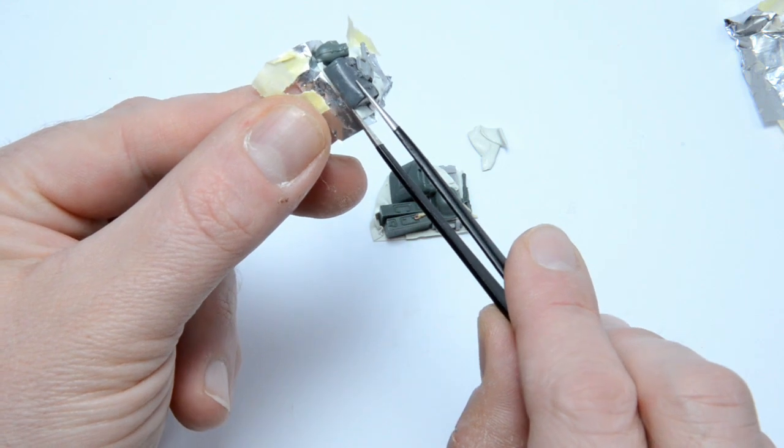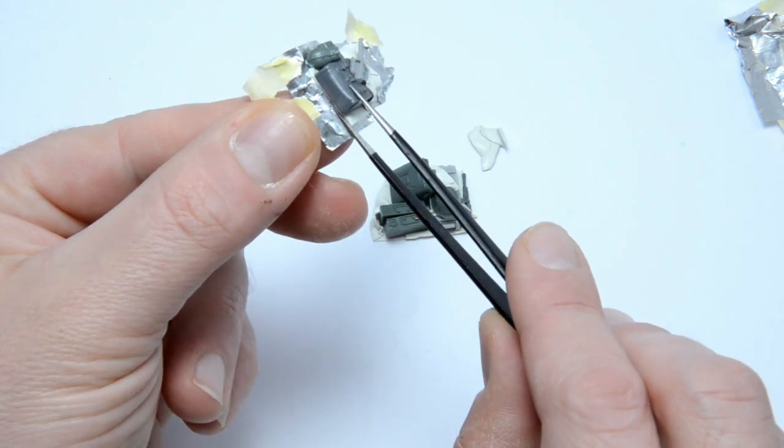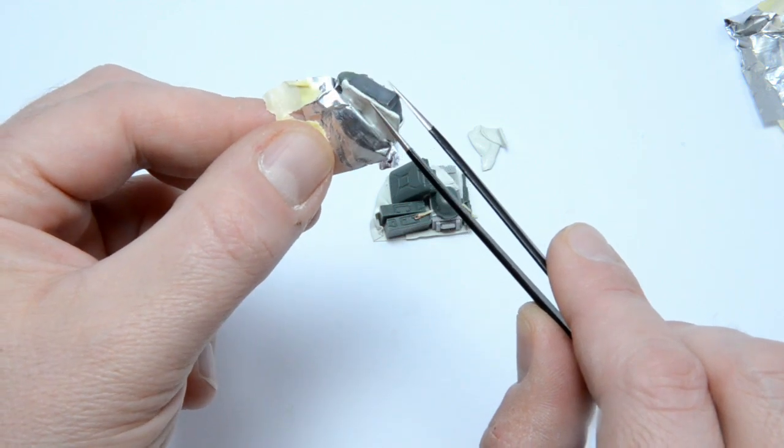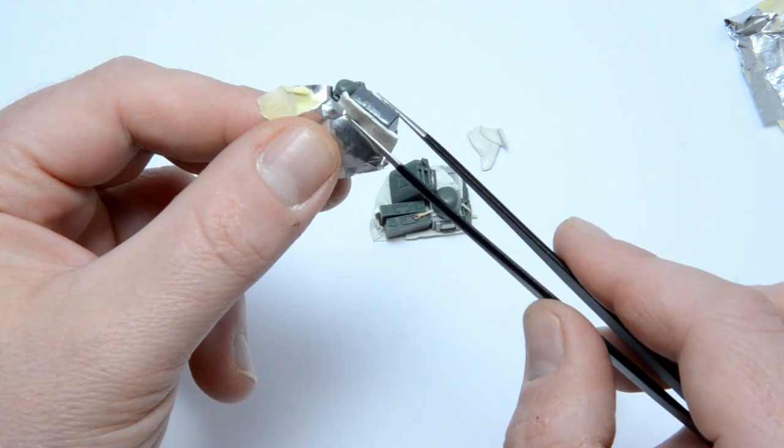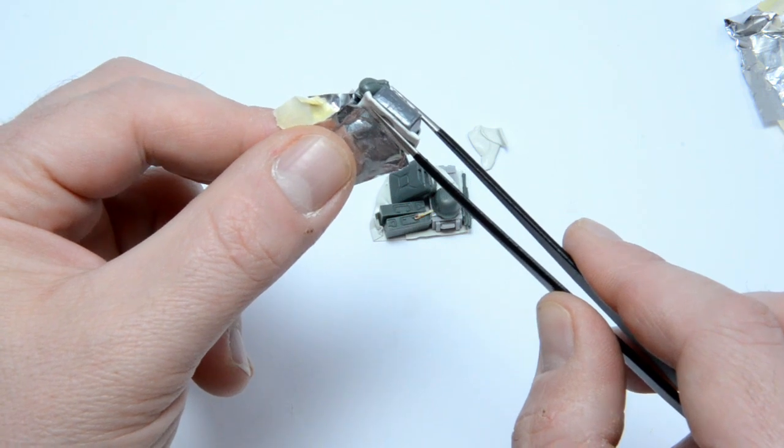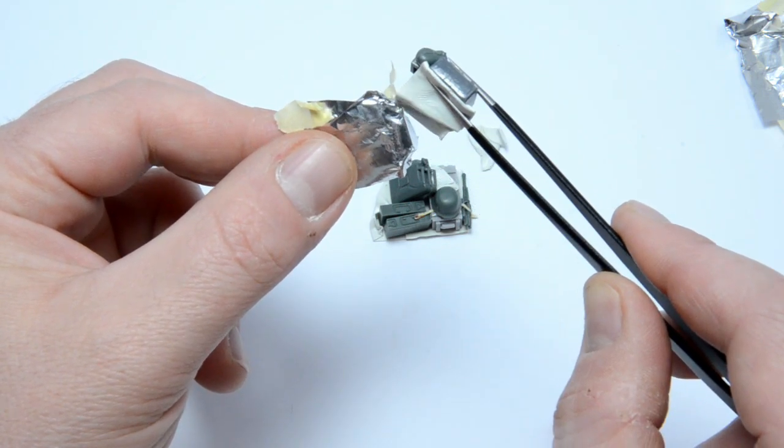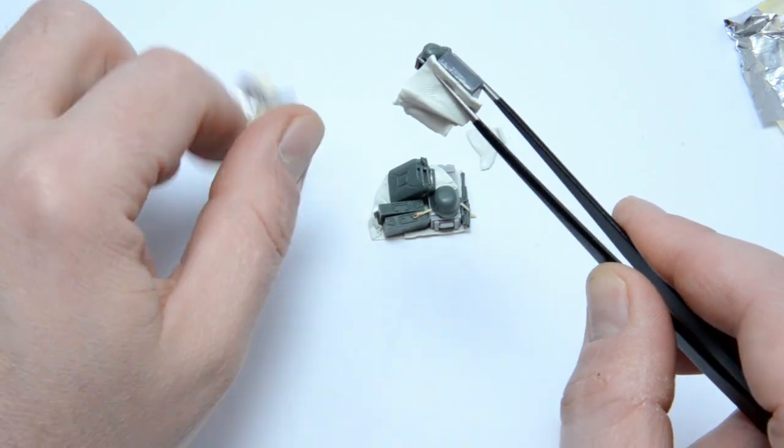After about 10 minutes, it was time to take the aluminum foil away. You should find the right time to do this, because if you wait too long, the tarp will stick to the foil. And if you do it too soon, you will destroy the shape of the tarp. It is quite a delicate moment.